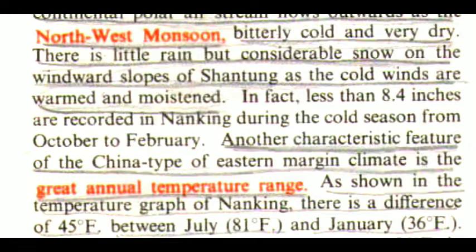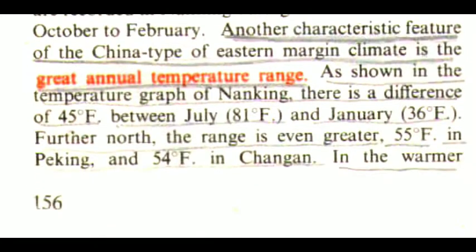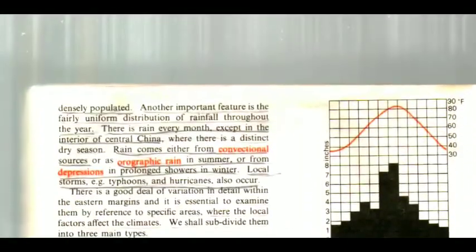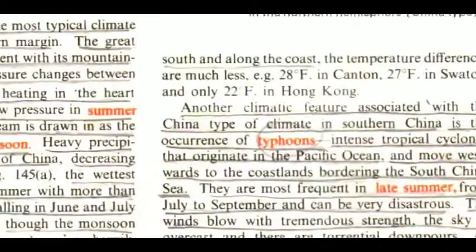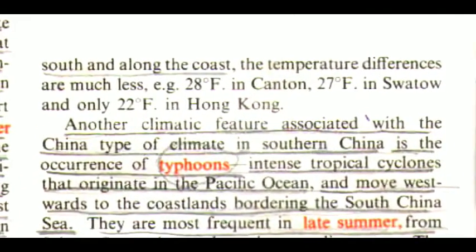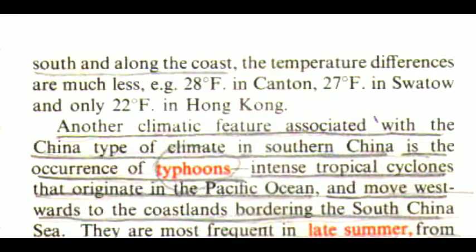Another characteristic feature of the China type of eastern margin climate is the great annual temperature range. As shown in the temperature graph of Nanking, there is a difference of 45°F between July at 81°F and January at 36°F. Further north, the range is even greater — 55°F in Peking and 54°F in Chang'an. In the warmer south and along the coast, the temperature differences are much less: 28°F in Canton, 27°F in Swatow, and only 22°F in Hong Kong.